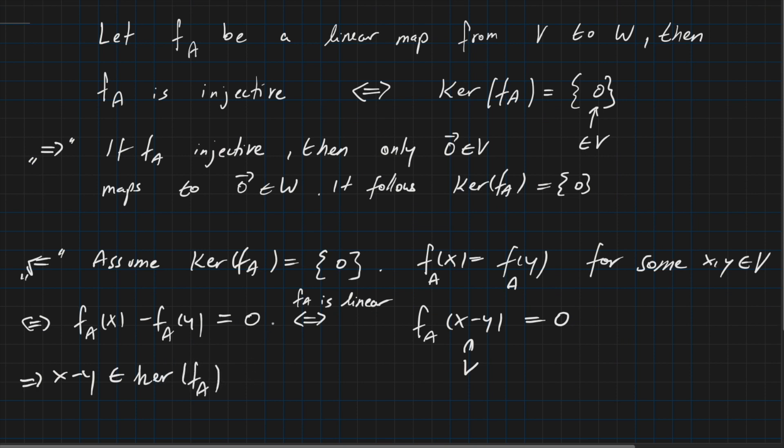But the kernel of FA is assumed to be only 0. So this is only consisting of the 0 vector. So the kernel of FA consists only of the 0 vector. This was our assumption for the second part of the proof. So it must follow x - y = 0. And this is equivalent to x = y.